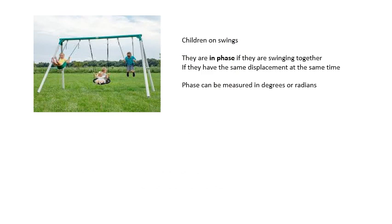This idea of phase — you don't talk about the phase of a wave; you talk about phase difference between two different points on a wave. Later on we'll talk about two different waves and what is the phase difference between them. A useful way of understanding it: think of kids on swings. If they're swinging together, if they have the same displacement at the same time, they are in phase. Phase can be measured in degrees or radians, and you should know that 360 degrees is 2π radians.